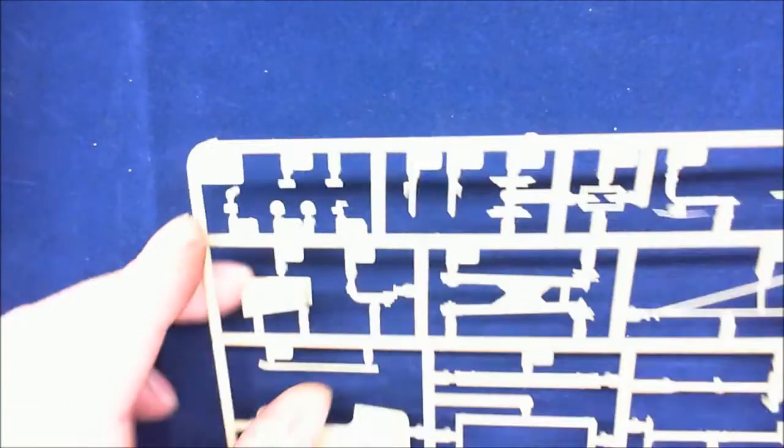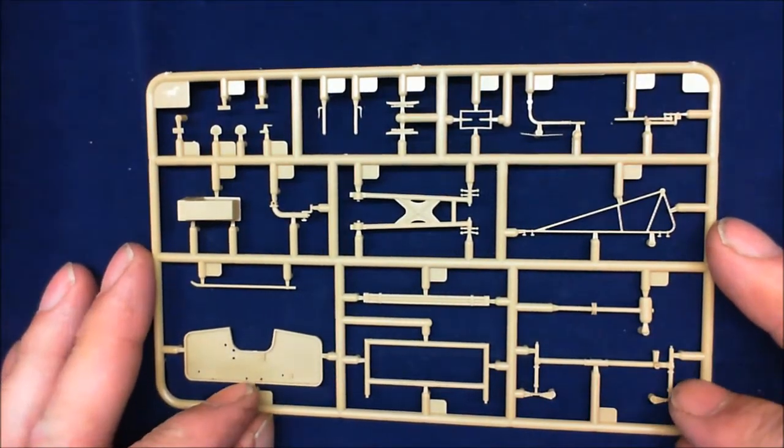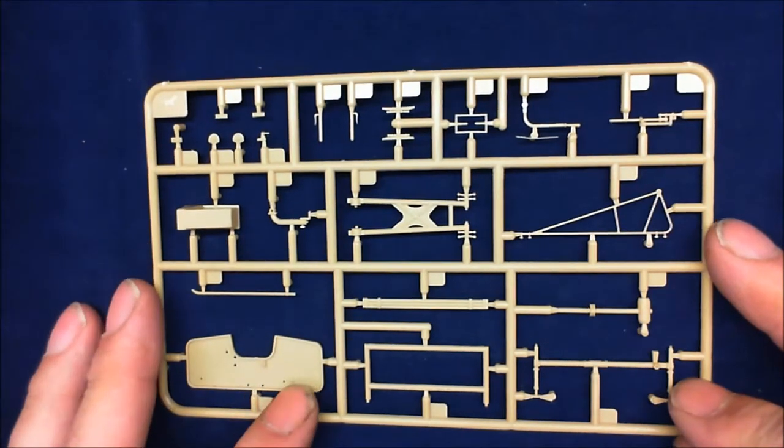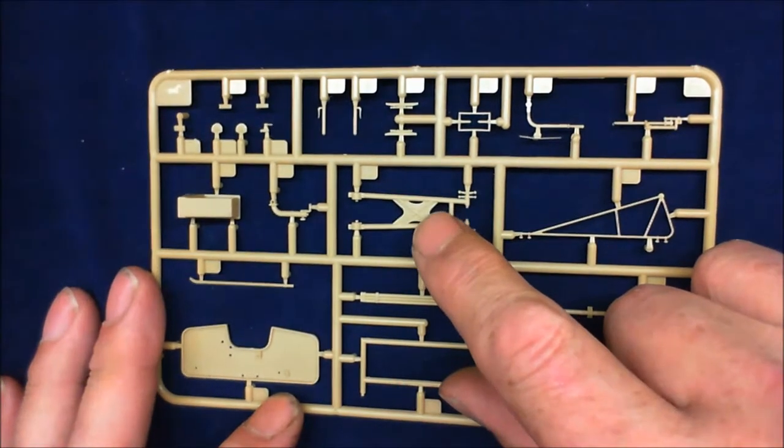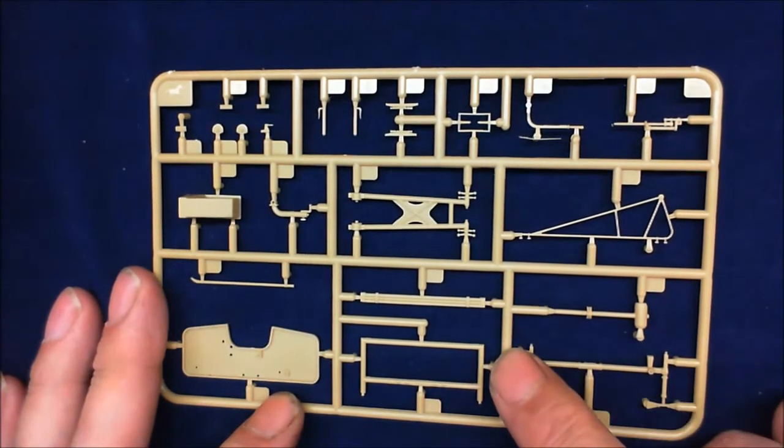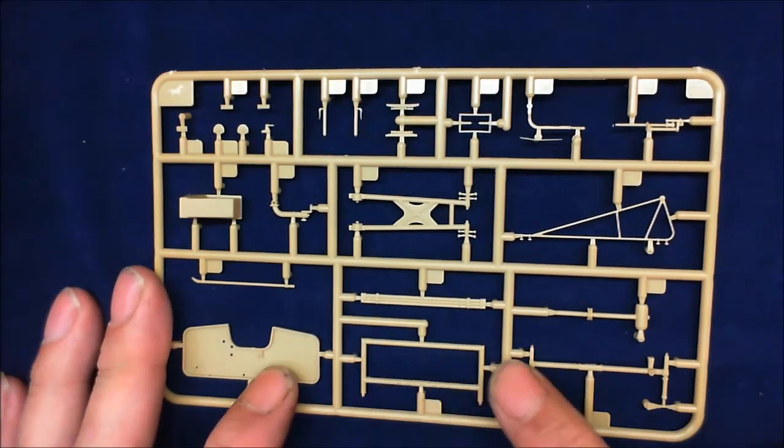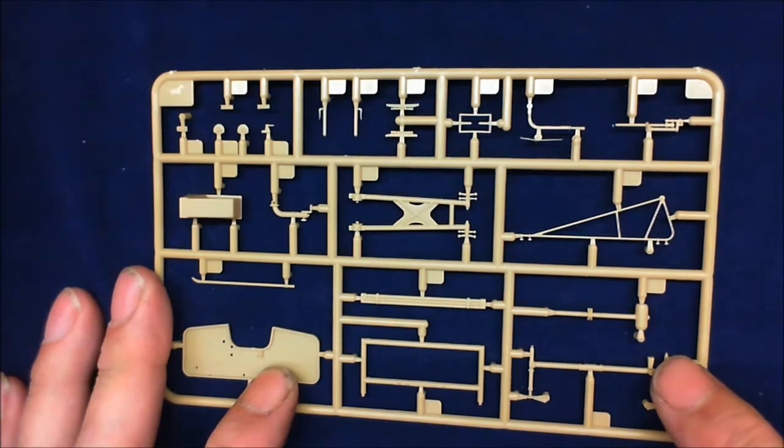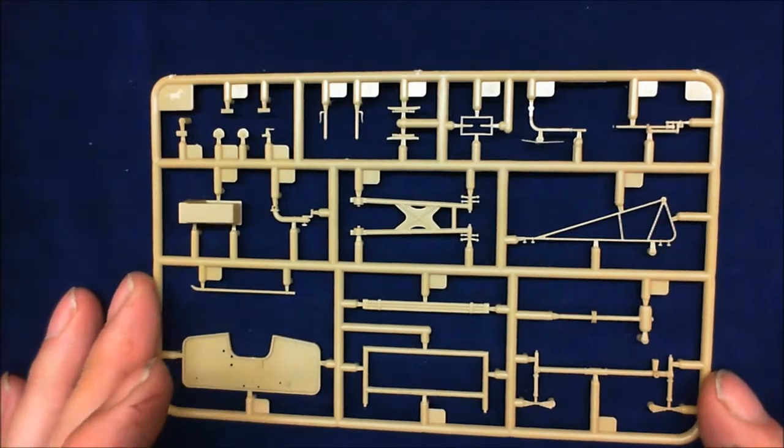On to the next one. I don't really know what I'm looking at, but I'm gonna have a good stab. I'll say that's some sort of towing hitch. Definitely cleaning rods. Something probably for the base plate. That's definitely the sights.